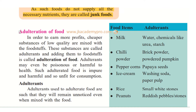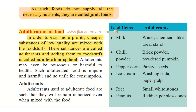Here is another important topic: adulteration of food. There are people who, in order to earn a little more profit, add other harmful products to food items so that the weight increases. Cheaper substances of lower quality are mixed with the foodstuffs — these substances are called adulterants. Adding them to foodstuff is called adulteration of food.